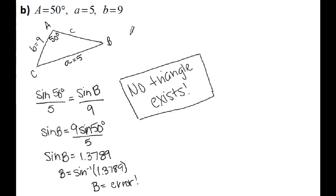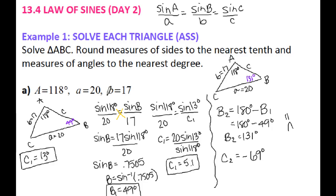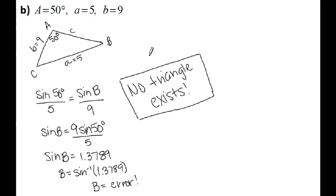We'll never be able to create a triangle with angle A being 50 degrees, side A being 5, and side B being 9. So for this example, there is no solution. To summarize: when using Law of Sines to solve triangles and solving for an angle measurement, you have three possible scenarios — one triangle, no triangle, or two triangles.